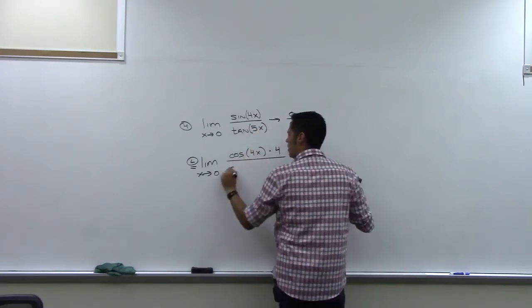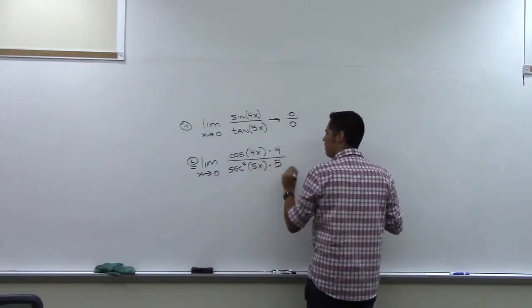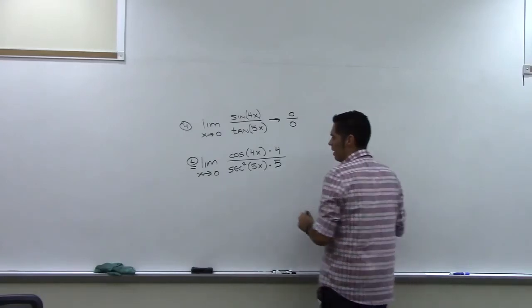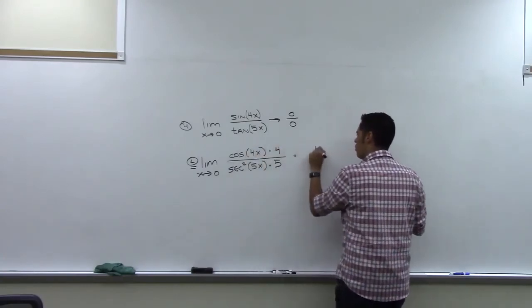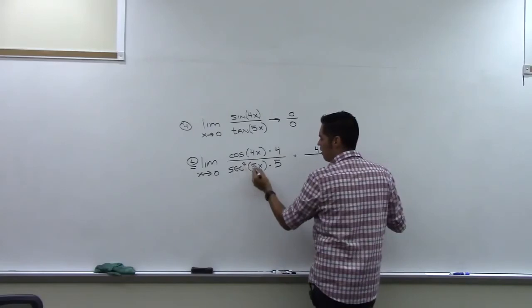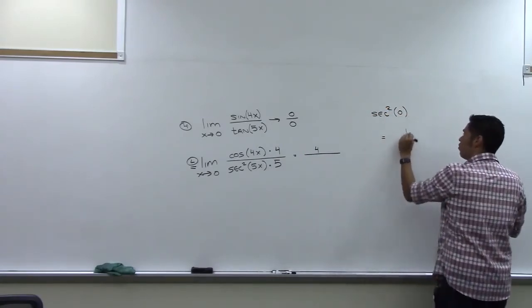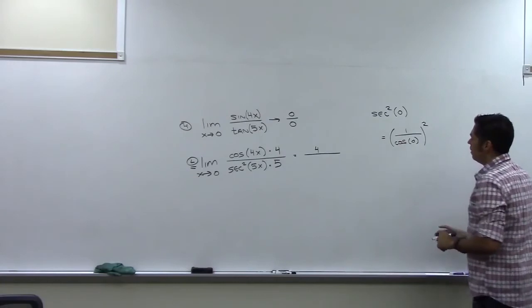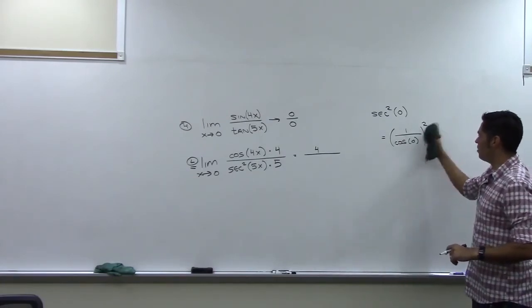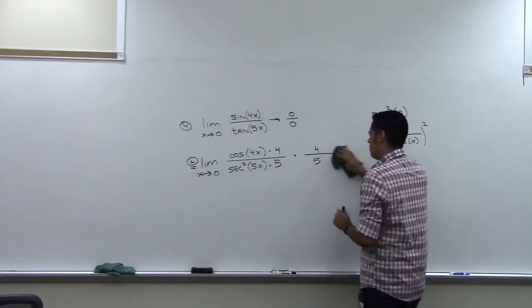Now letting x go to zero: four times zero is zero, cosine of zero is one, so the top goes to one times four, which is four. On the bottom, secant squared of five times zero: secant squared of zero equals one over cosine squared of zero, which is one over one, which is one. So the bottom goes to one times five, which is five. The answer is four fifths.